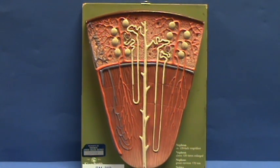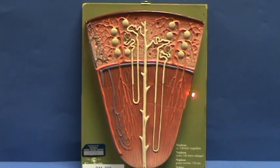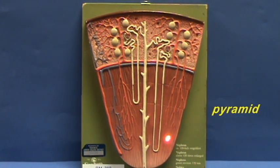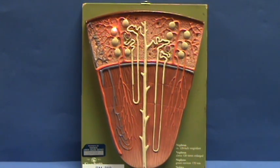This is a close view of what would be a renal lobe, except that the renal columns which would form the sides of this renal lobe are not present. But here you have the pyramid, which you would find within the renal medulla, and here you have the renal cortex.